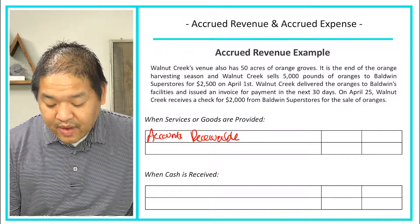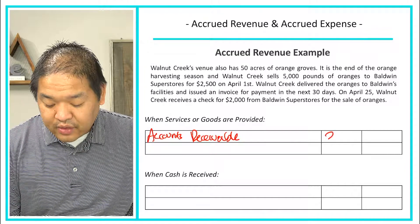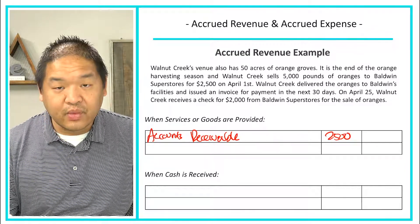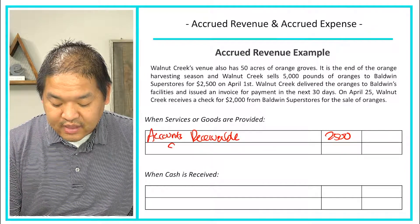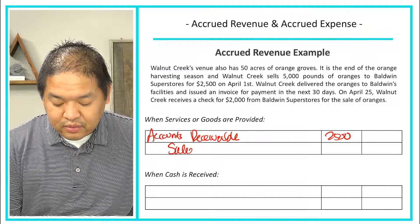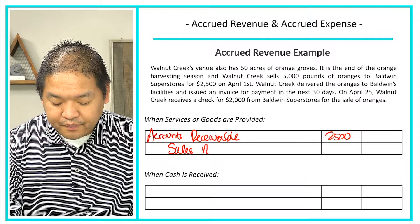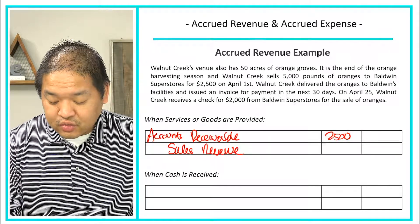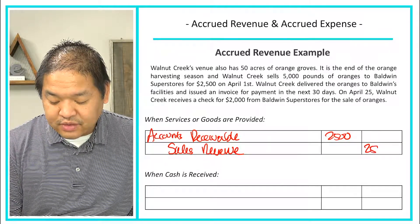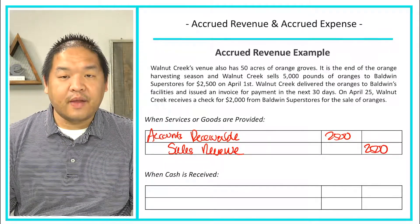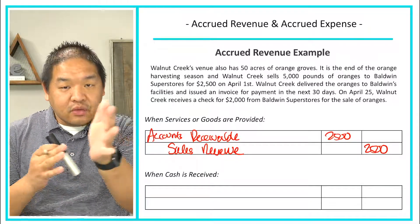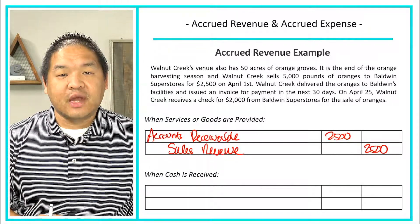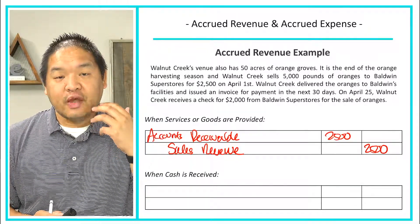When we provide the goods or services, we debit Accounts Receivable for $2,500 — the amount we're owed — and credit Sales Revenue for $2,500.